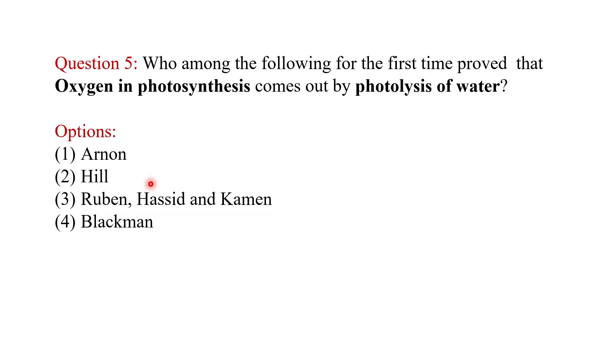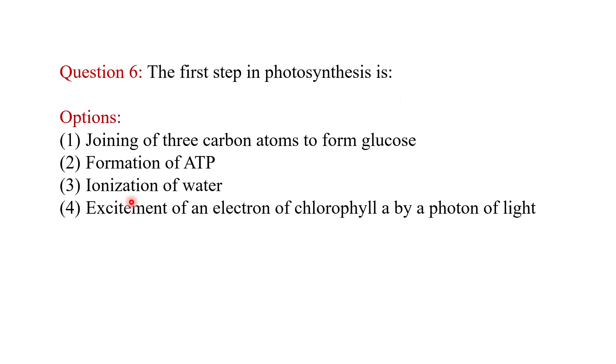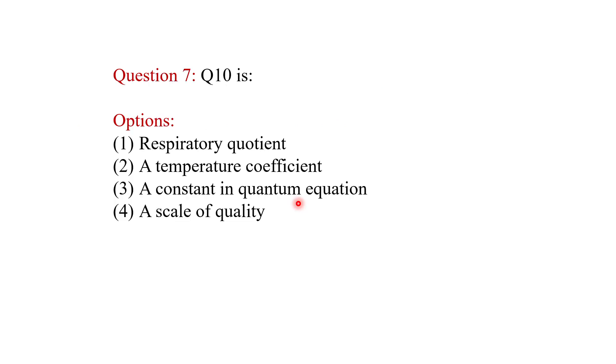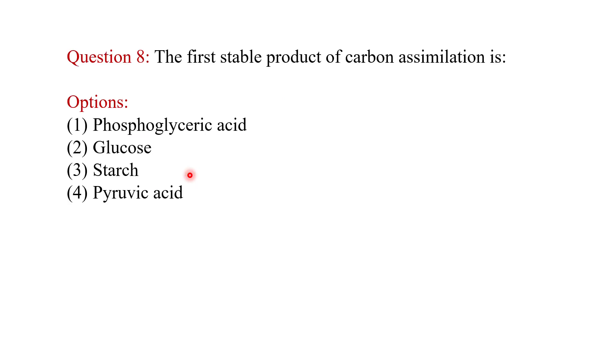The next question is: who among the following for the first time proved that oxygen in photosynthesis comes out by photolysis of water? The answer is Ruben, Hassid, and Kamen. The first step in photosynthesis is the excitation of an electron of chlorophyll A by a photon of light. Q10 is a temperature coefficient.